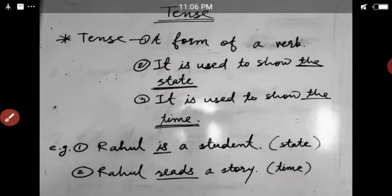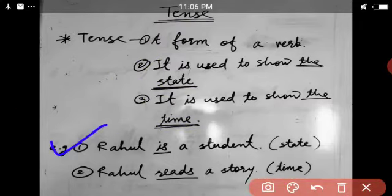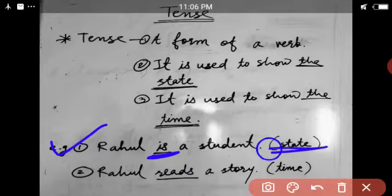Let us see the examples. First example: Rahul is a student. Here in this sentence, the word 'is' is used as a main verb. And here, as it is not an action verb, it is showing the state.